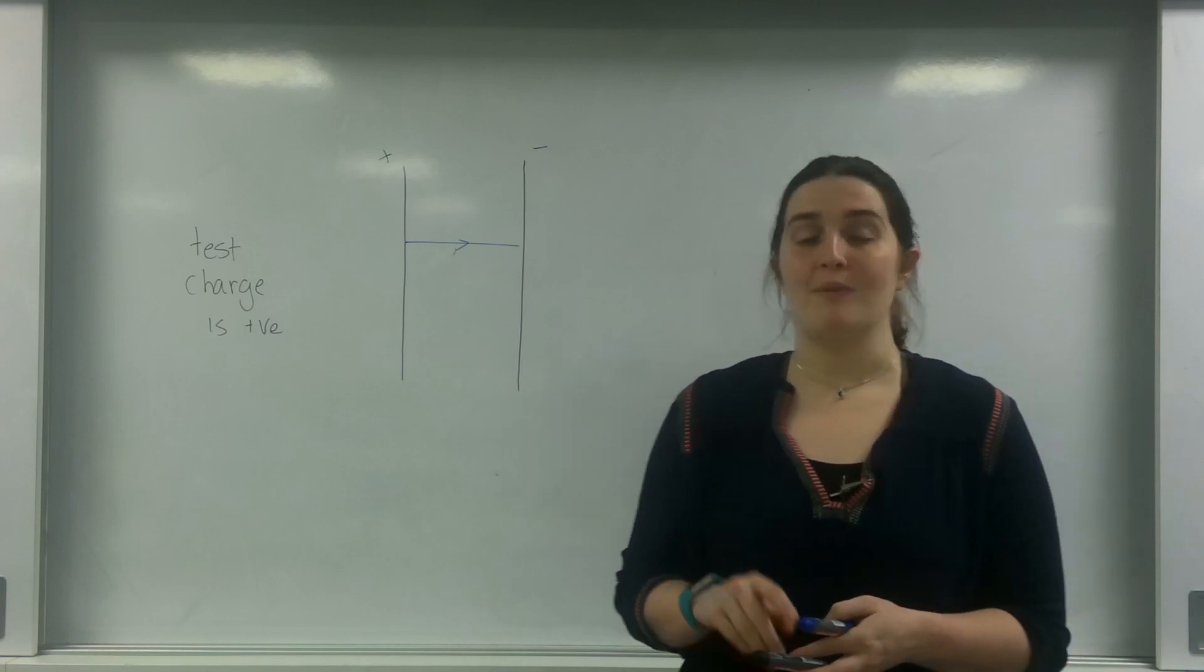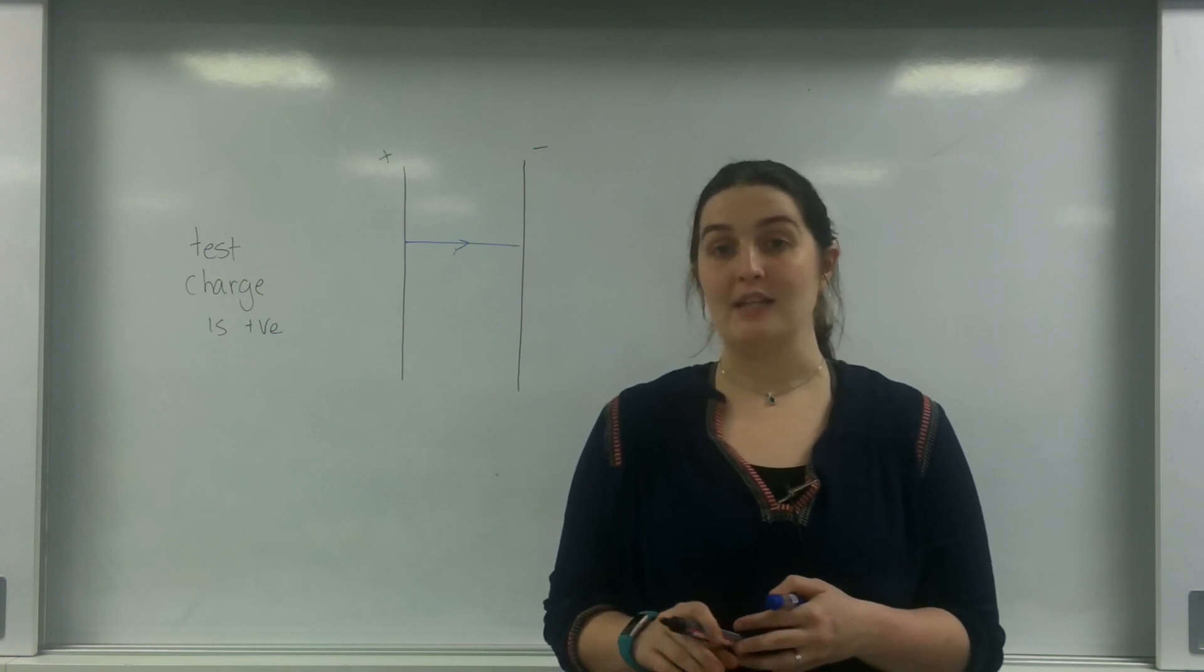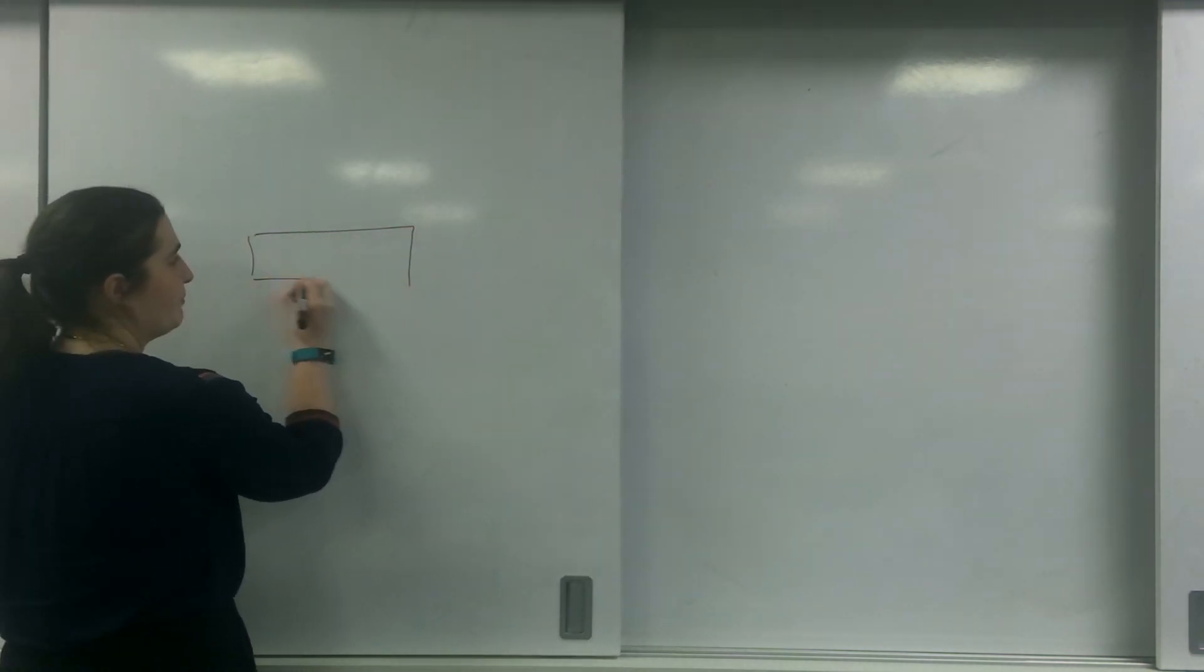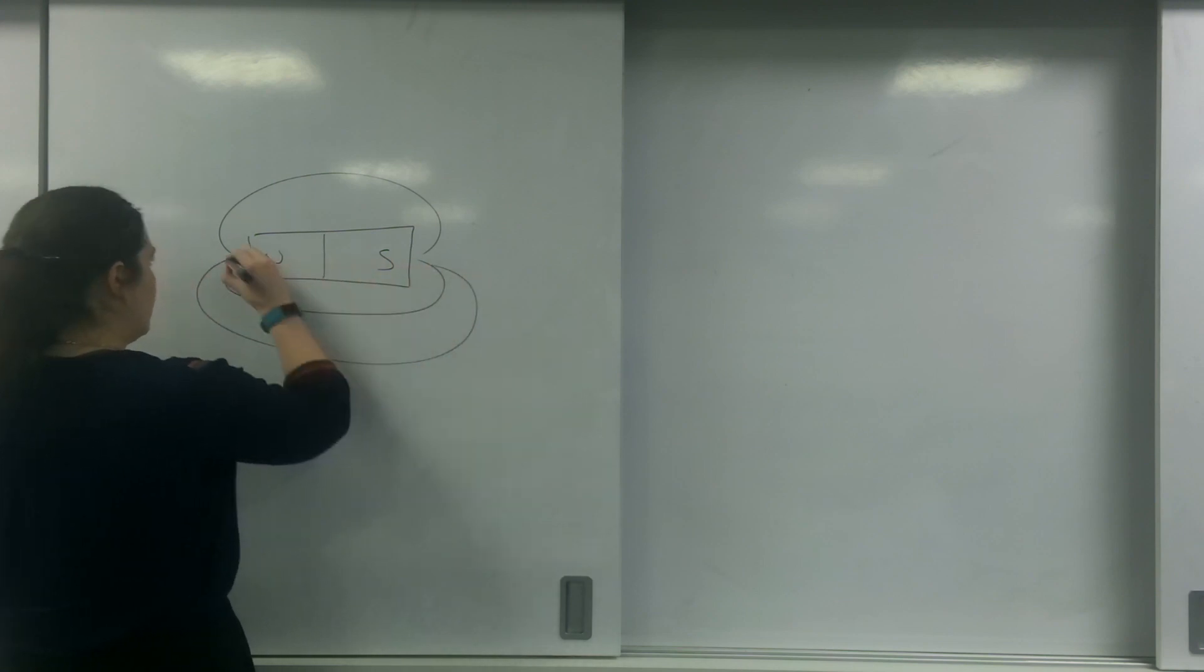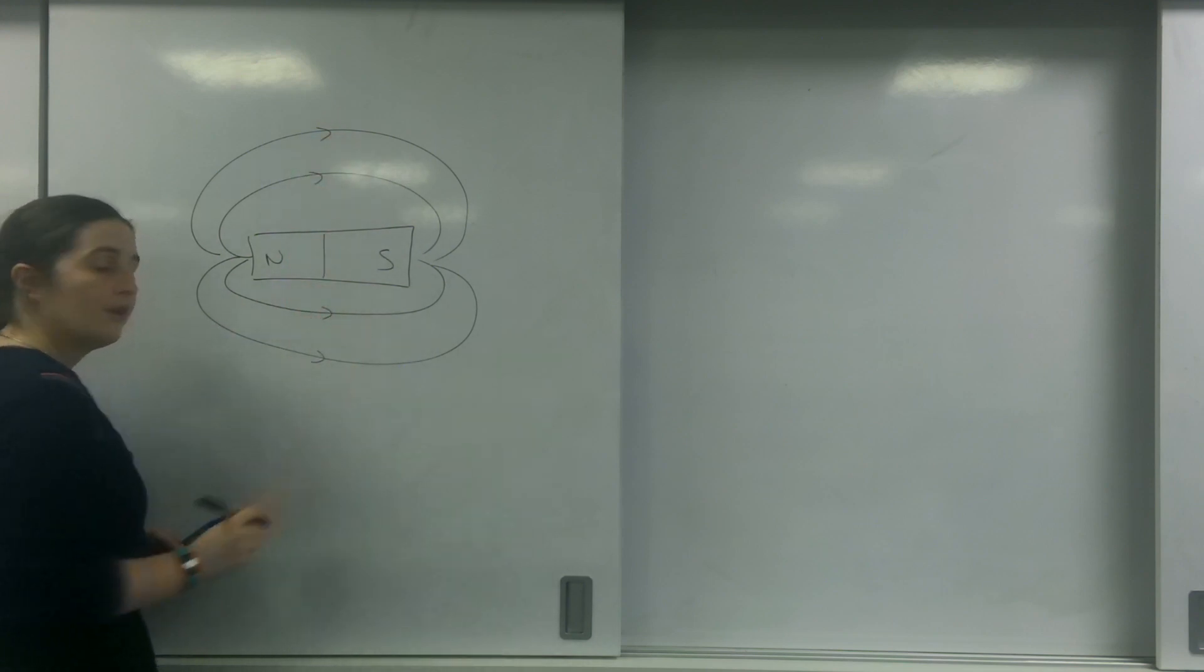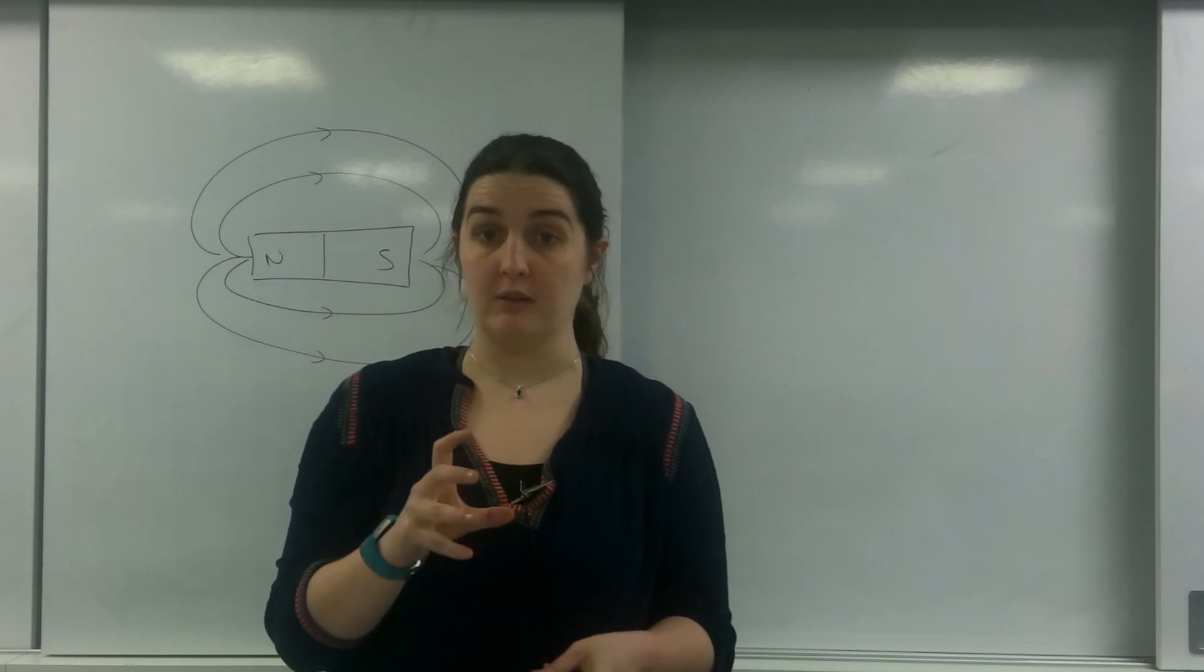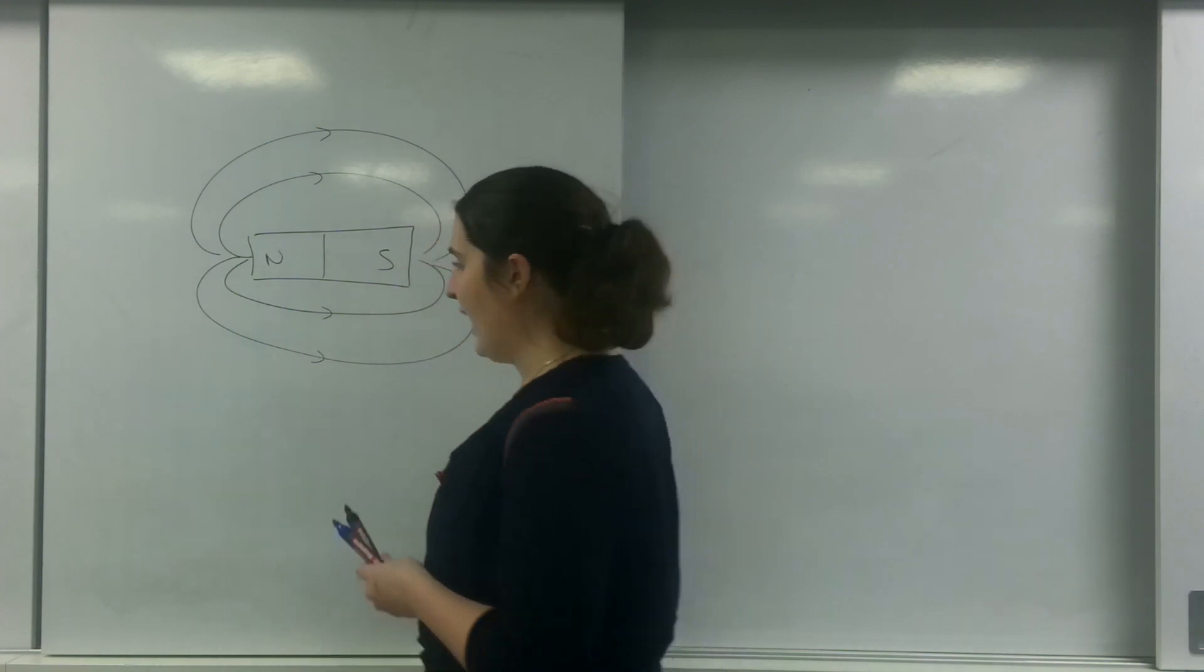In a uniform electric field, the field strength is the same no matter where I am in the field. If you can remember from magnetic fields, these field lines go from north to south. The strongest part of my field is where the lines are closest together. Which means for a uniform field, these lines must be the same distance apart at all points.